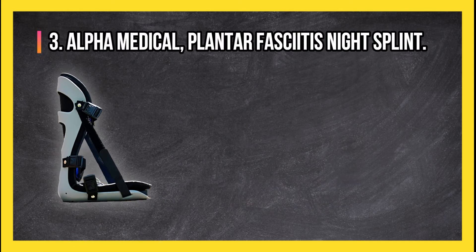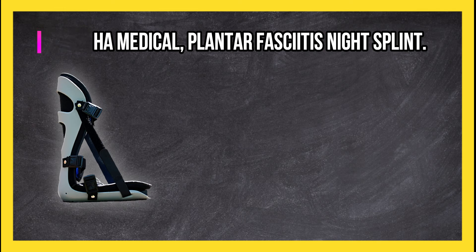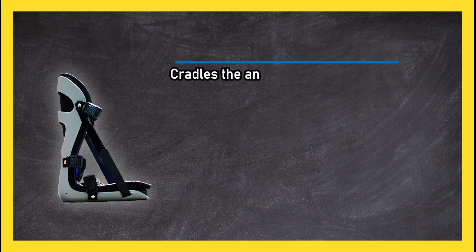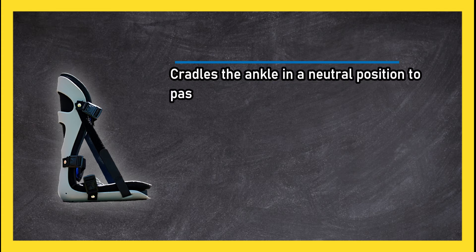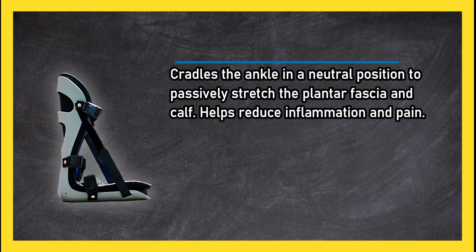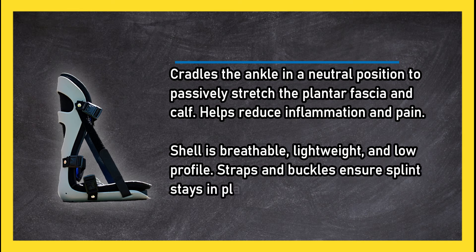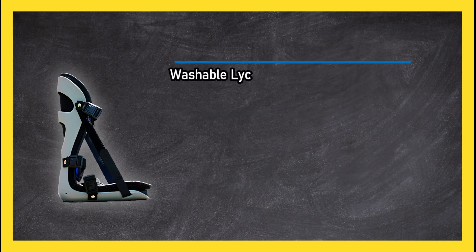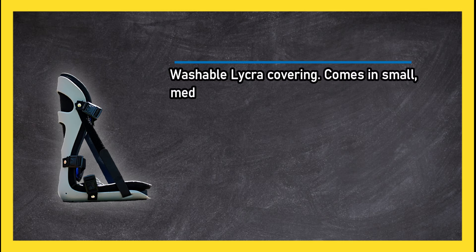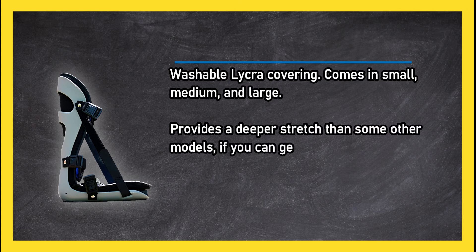At number 3, the Alpha Medical plantar fasciitis night splint cradles the ankle in a neutral position to passively stretch the plantar fascia and calf, helping reduce inflammation and pain. The shell is breathable, lightweight, and low-profile. Straps and buckles ensure the splint stays in place. Washable liner included. Comes in small, medium, and large. Provides a deeper stretch than some other models.